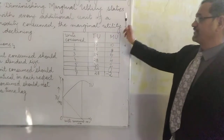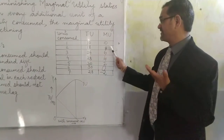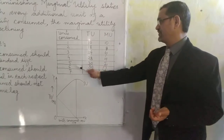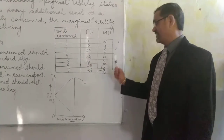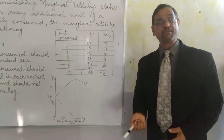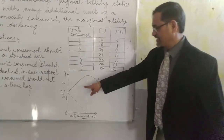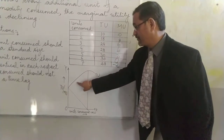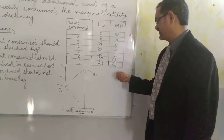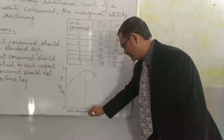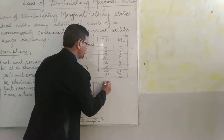What does this tell us? With the first chapati my marginal utility was 10. With the second, a little less — 8. Third gave 6, fourth gave 4, fifth gave 2, the sixth gave zero satisfaction — I'm completely full. If I eat the seventh, there's negative satisfaction — I'll start feeling sick and unable to digest it. This is the tabular representation. If I plot it on a graph, total utility increases from 10 up to 30, then marginal utility becomes zero and total utility starts falling — going negative below the x-axis.